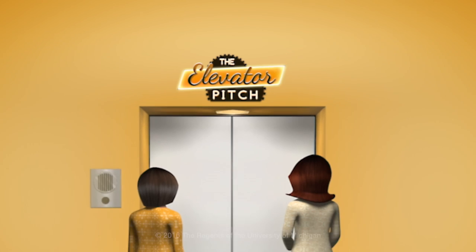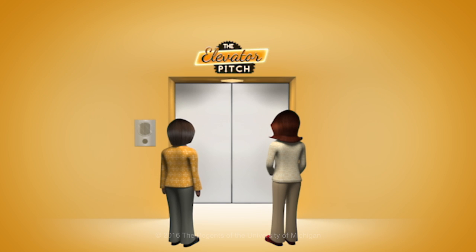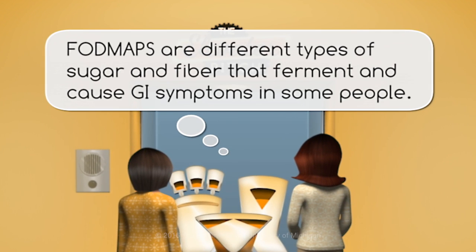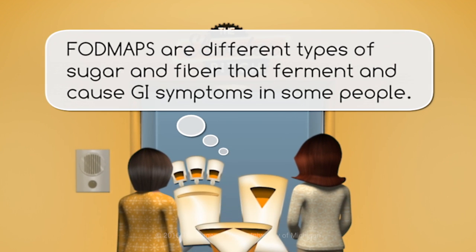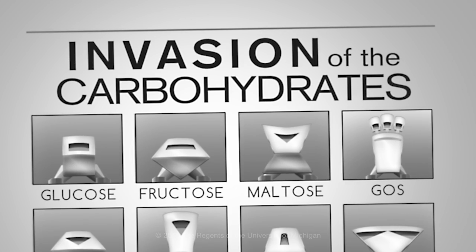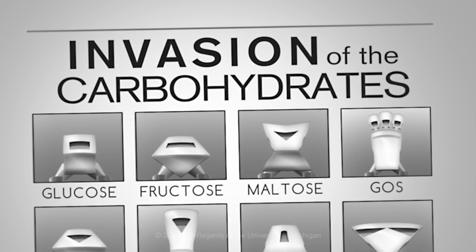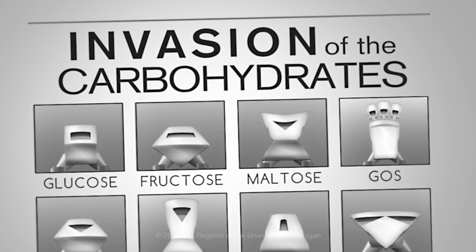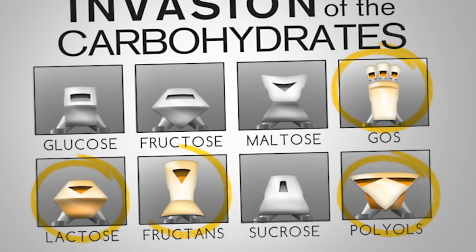On the other hand, if you're looking for a quick way to explain them to other people, FODMAPs are different types of sugar and fiber that ferment and cause GI symptoms in some people. FODMAPs are certain kinds of carbohydrates found in food. Not all carbohydrates are FODMAPs, just certain ones.